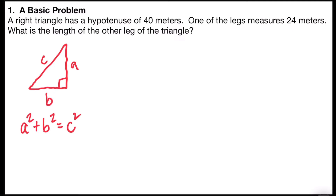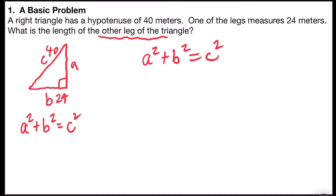In this problem, we know that the hypotenuse is 40 meters, and we know that one of the legs is 24. It doesn't matter whether we call 24 the A leg or the B leg — we're just trying to find the other leg. So we have A squared plus B squared equals C squared, and we can substitute. We'll leave A squared, substitute 24 for B and square it, and substitute 40 for C and square it.